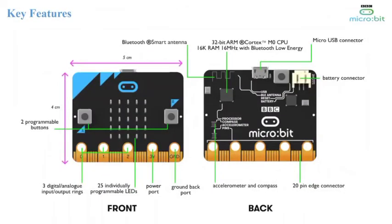This slide depicts the key features of the microbit device. This picture demonstrates the front and rear view of the device. The front side has two buttons named A and B, three output pins, 25 LED lights, a power port, and a ground port. The back side has a processor, sensors, USB port, battery connector, pin edges, and Bluetooth. We will be using the A and B buttons to give input and view the results of our program through the 25 LED lights. Other components are used in specific scenarios. We will showcase some of such scenarios in our upcoming sessions.